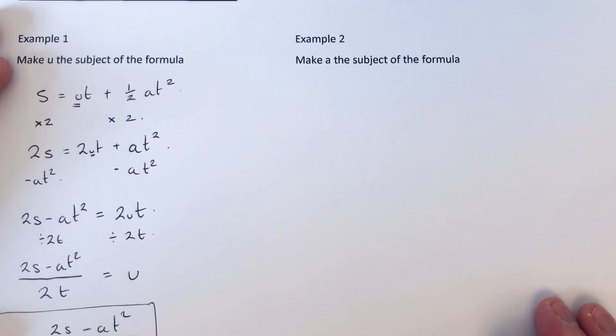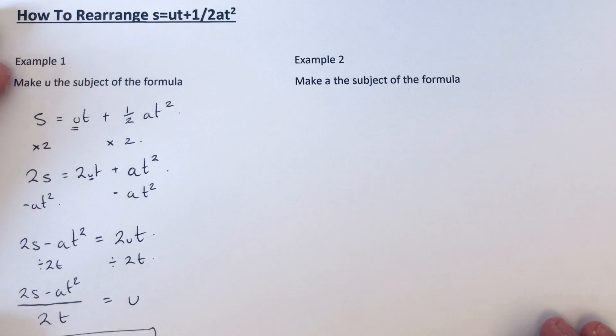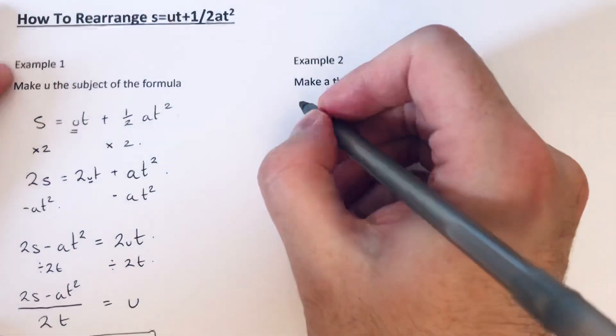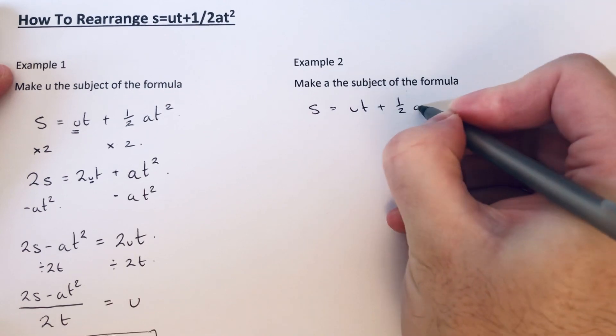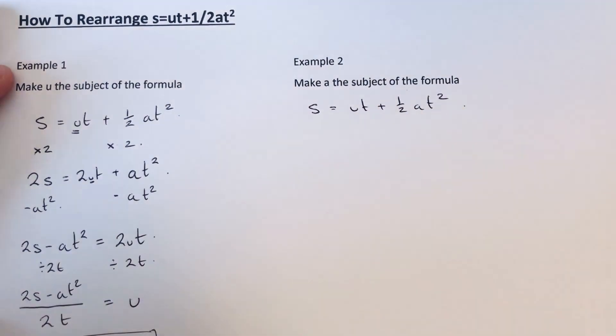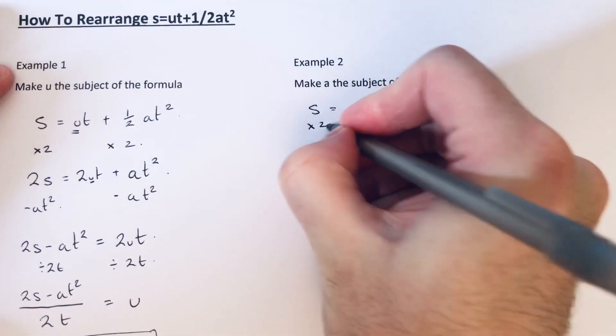So let's move on to example 2. This time we've got to make a the subject. So I'll just copy out the formula again. I think it's best again to times everything by 2 to get rid of the fraction.